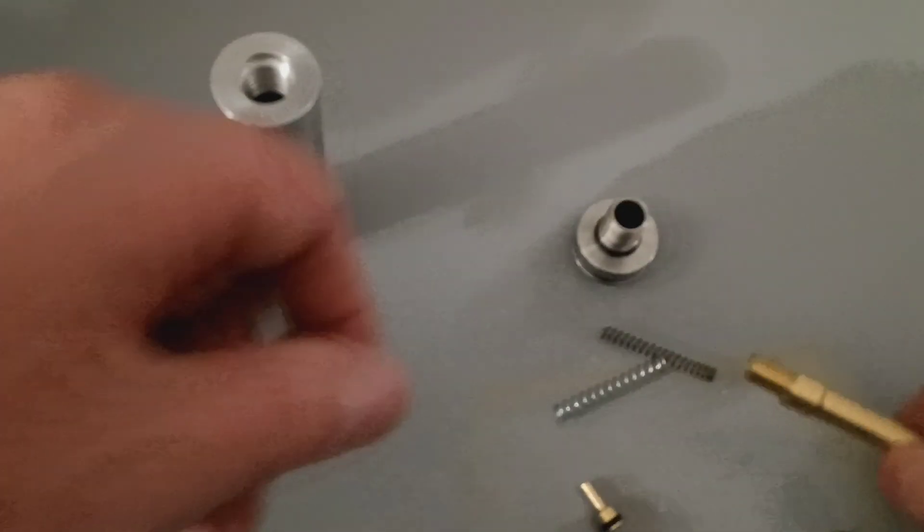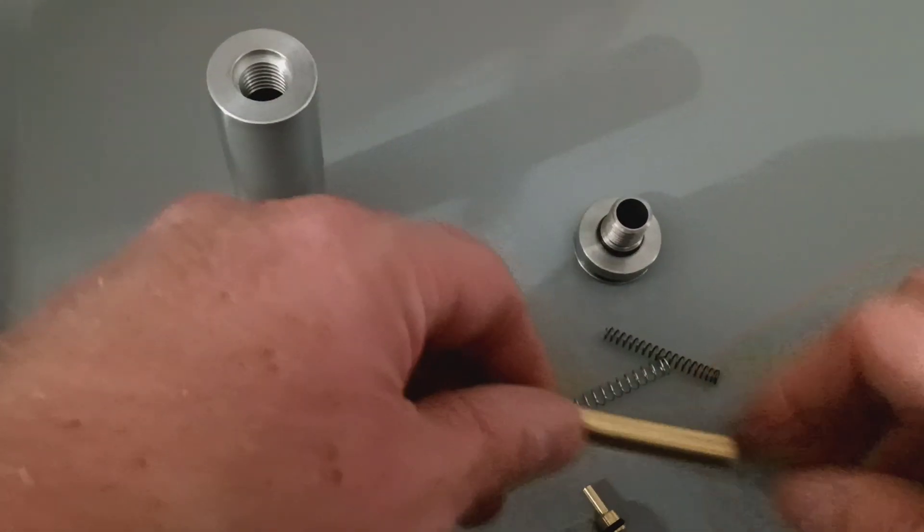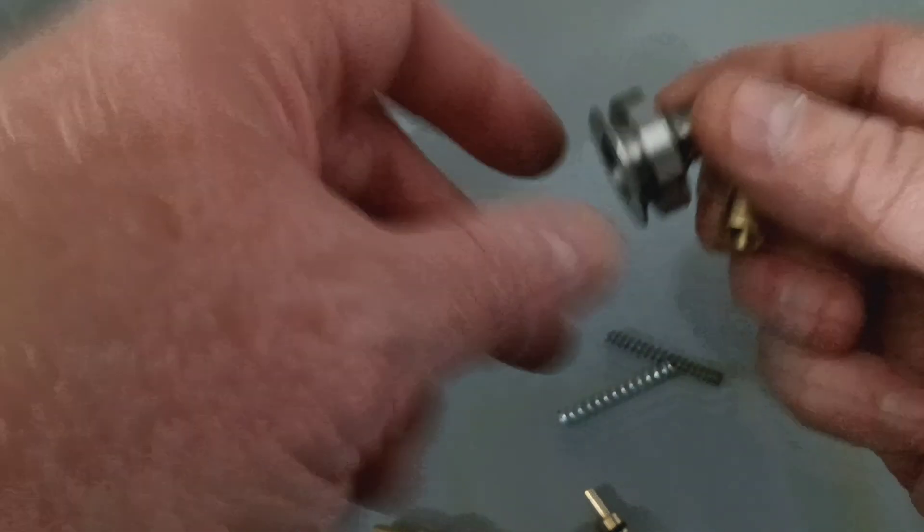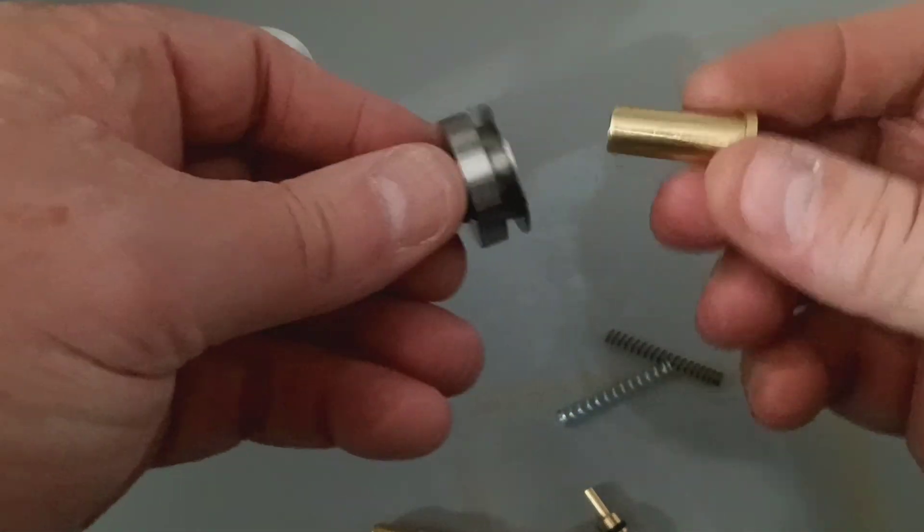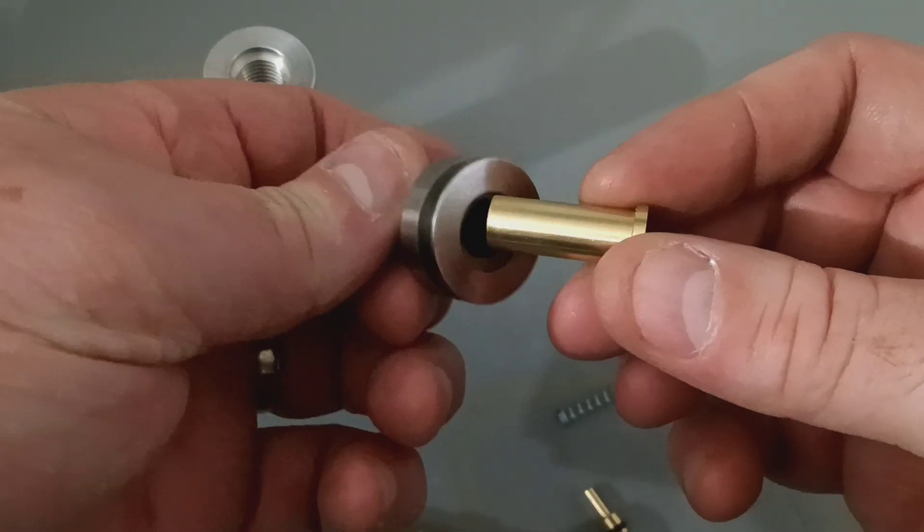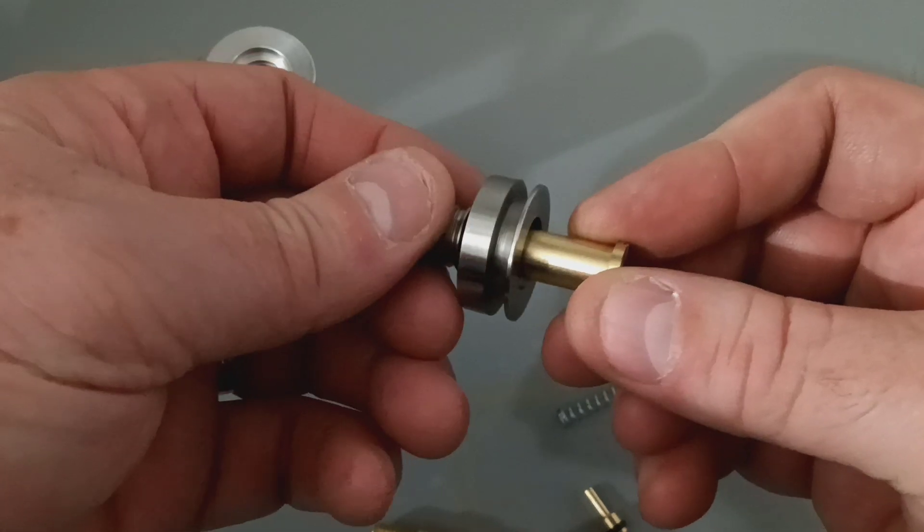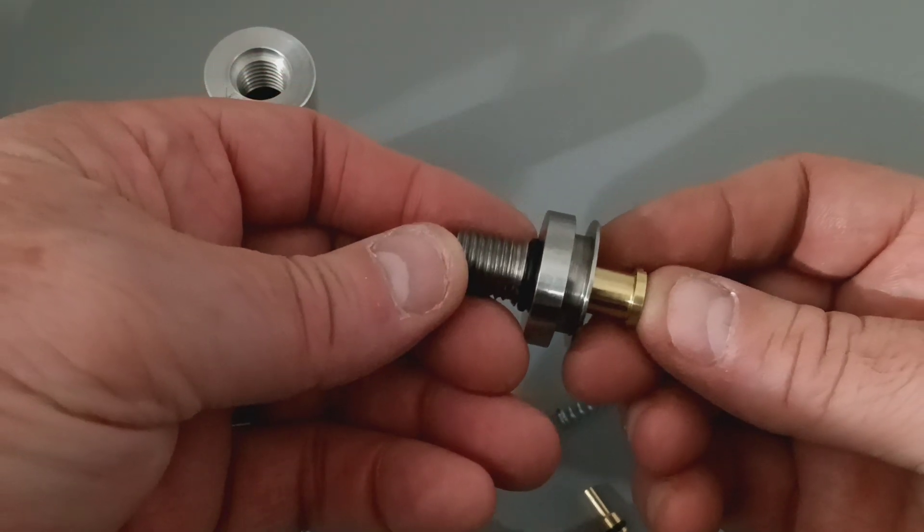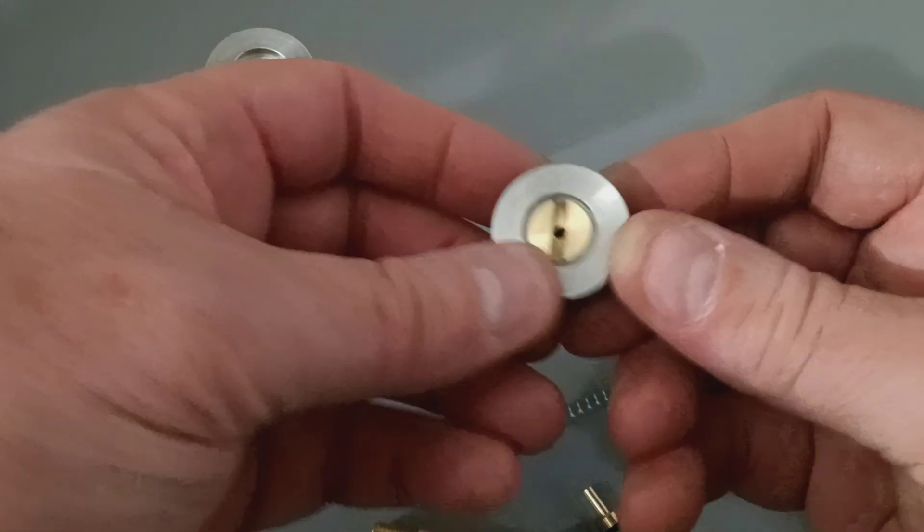So here's how it goes together. This slips in through here. There's an O-ring in there. It's on the wall.